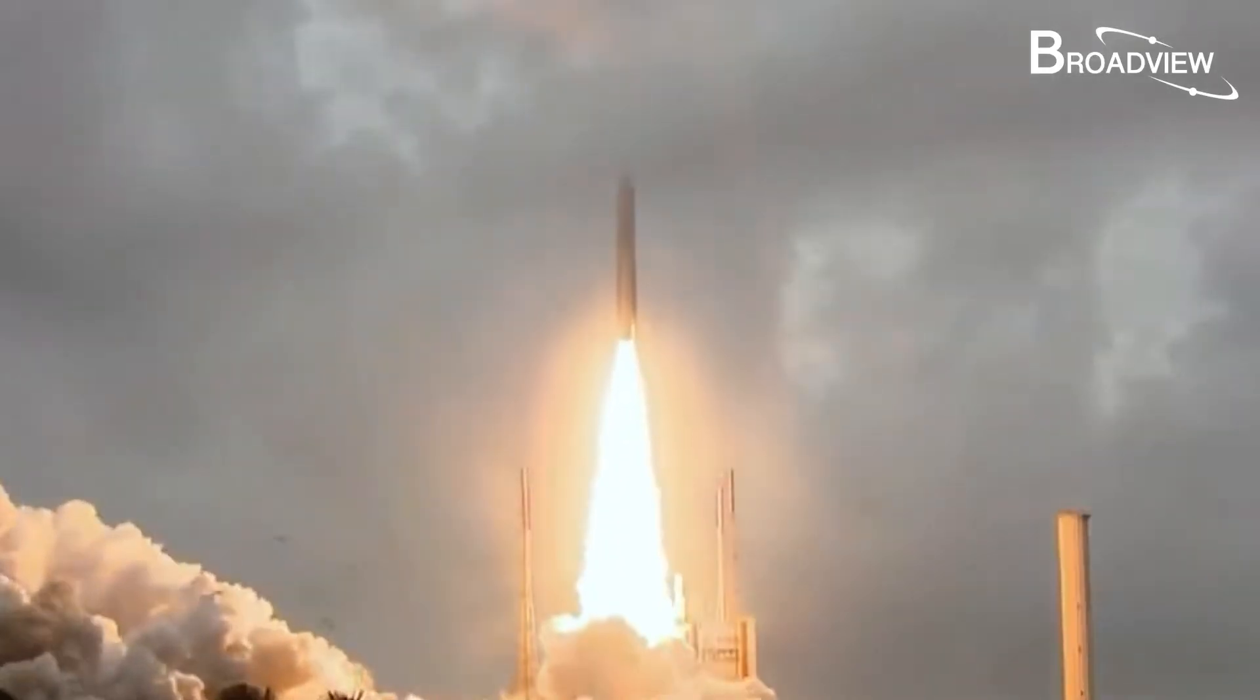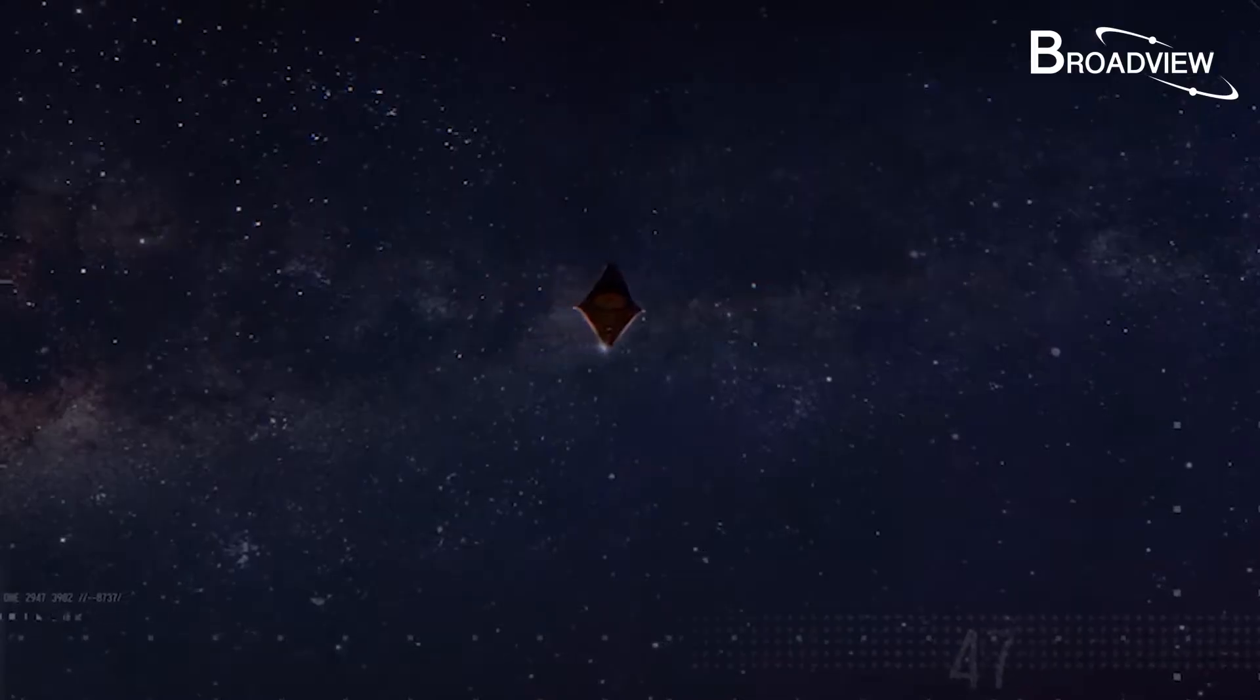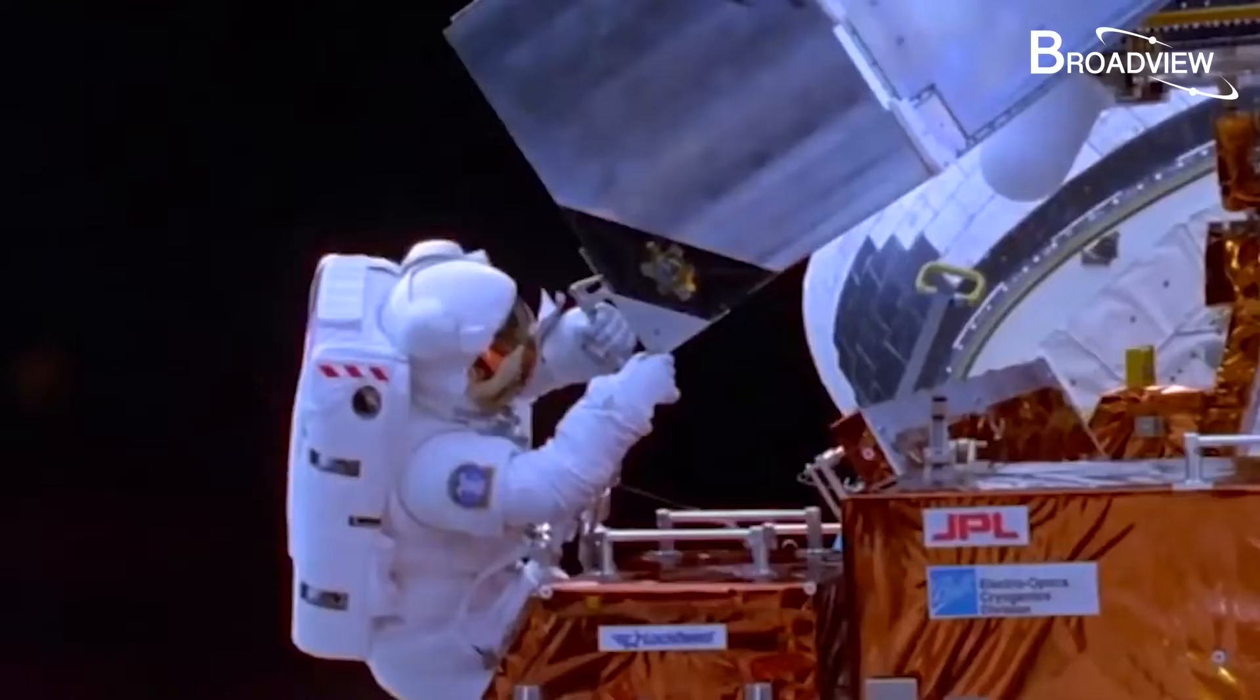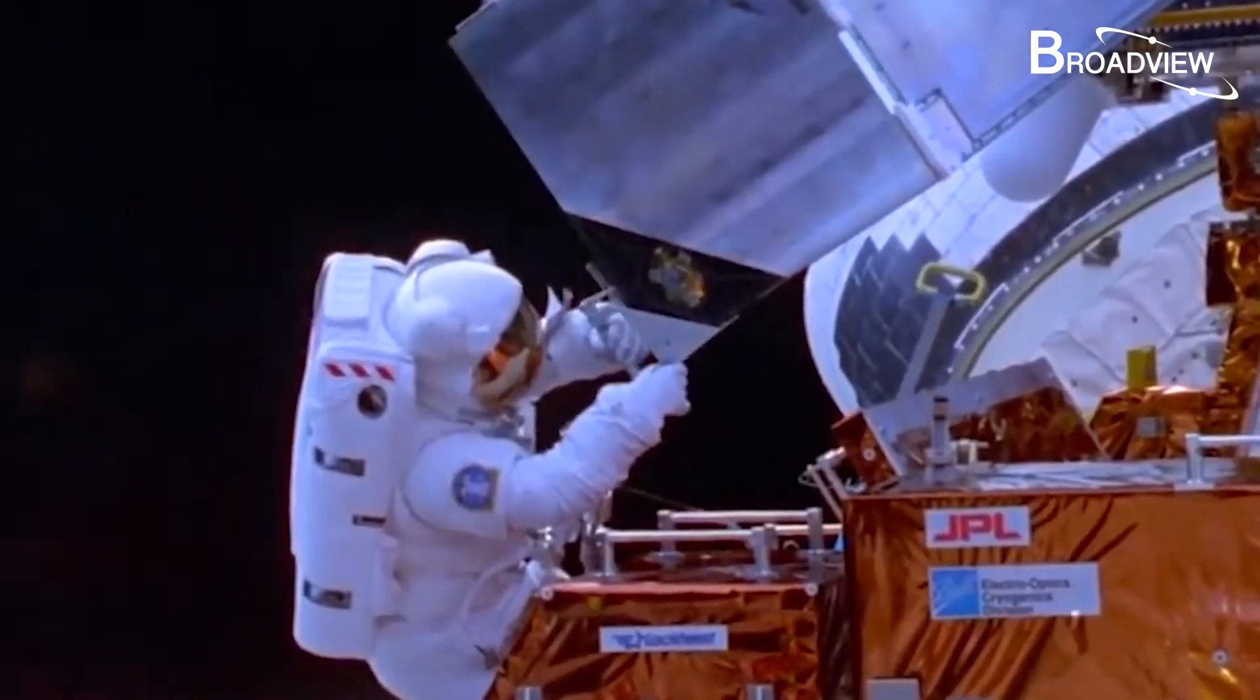Once the James Webb telescope is sent out, it could be rendered useless if there's a problem. Essentially, it would be floating in its new grave. Any maintenance or modifications to Hubble can be done by sending out astronaut technicians. This would be impossible for James Webb, making its risk of failure huge.